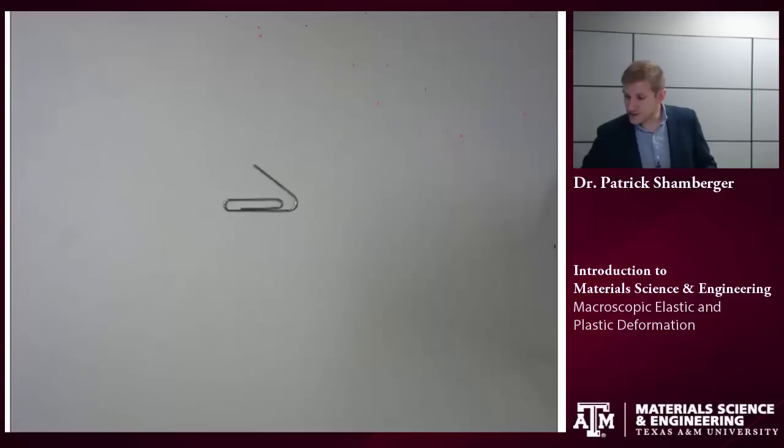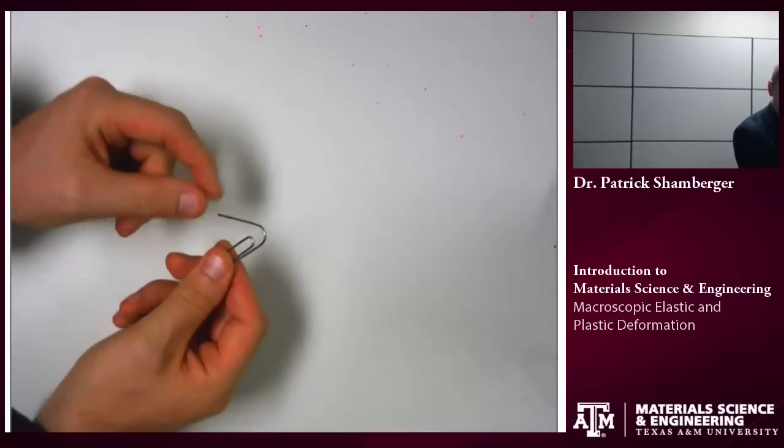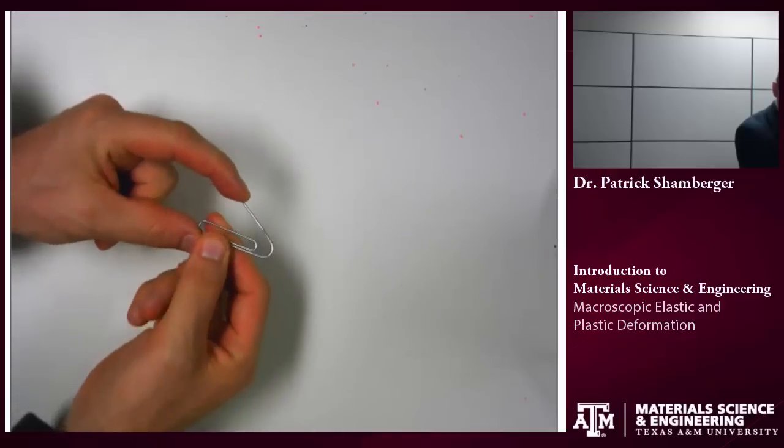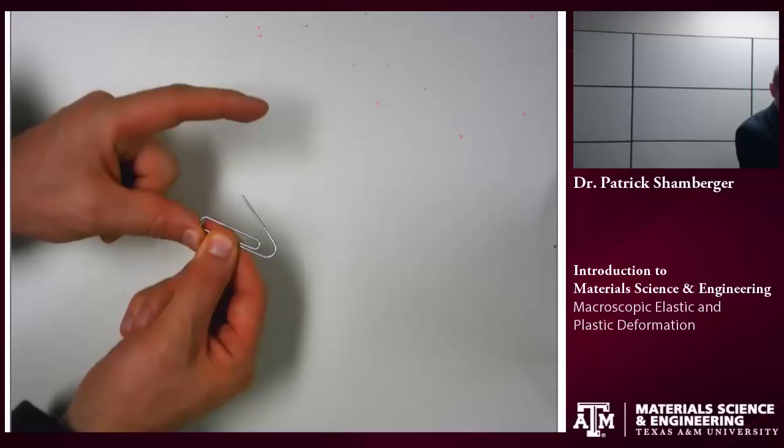Let's look at a quick demonstration now. This is a paper clip. You've seen one of these before. If I apply some initial stress, this is not a lot of stress, I've changed the shape. But when I remove that stress, it bounces back to the original shape. So this would be an example of elastic strain.